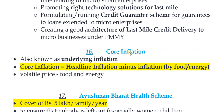Core inflation is also known as underlying inflation. Core inflation means headline inflation minus the inflation of volatile prices — specifically food and energy prices. After subtracting these volatile components from headline inflation, you get the core or underlying inflation.